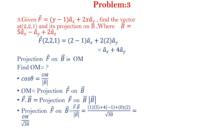Problem 3. Given F is equal to (y minus 1)ax plus 2x ay. Find the vector at point (2, 2, 1) and its projection on B, where B is equal to 5ax minus ay plus 2az. Substituting x equal to 2 and y equal to 2 into the equation for F, the answer is ax plus 4ay.